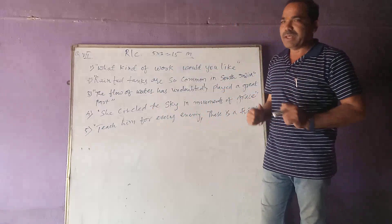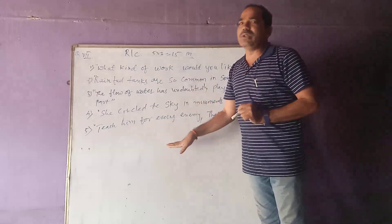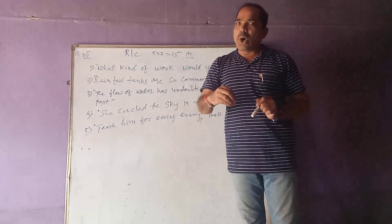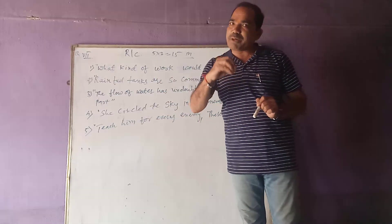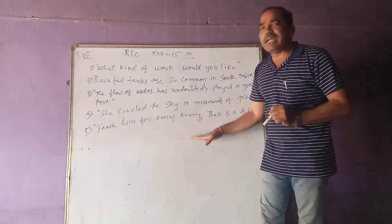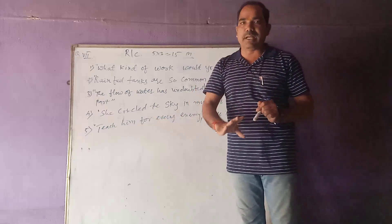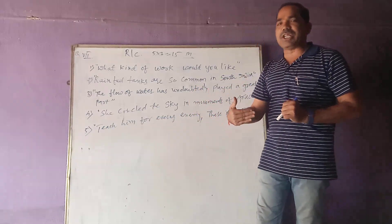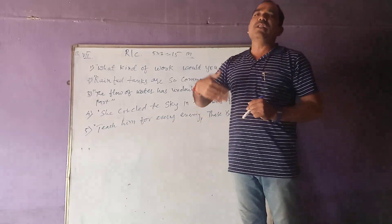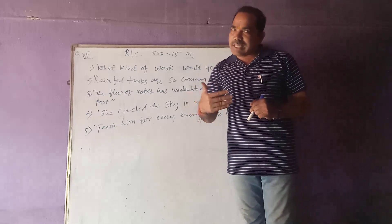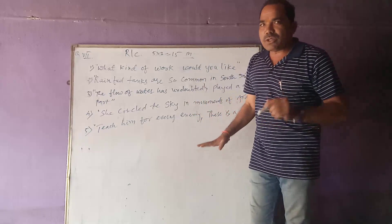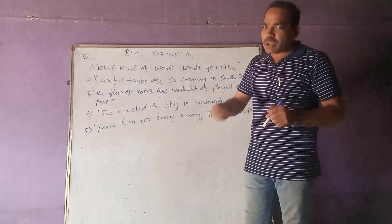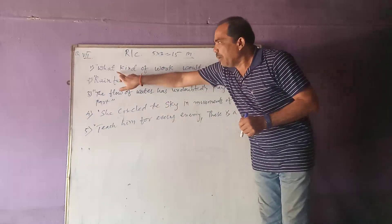Generally in many schools, the 10th standard exam is conducted on every 25 percent of the syllabus, so at least four exams are taken before the preparatory exam. After four revision tests, there is one preparatory exam, and after that the annual exam. This is the schedule followed by each and every school.